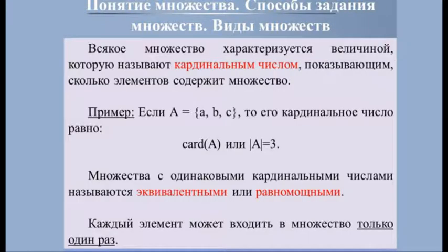Всякое множество характеризуется величиной, которую называют кардинальным числом, показывающим, сколько элементов содержит множество. Для обозначения числа элементов используют две вертикальные черты, между которыми записывают множество или его обозначение. Например, если A = {a, b, c}, то его кардинальное число равно 3. Множества с одинаковыми кардинальными числами называются эквивалентными или равномощными. Каждый элемент может входить в множество только один раз. Множество A называется подмножеством множества B, если всякий элемент множества A является элементом множества B (A ⊆ B).